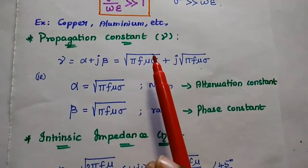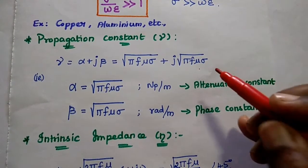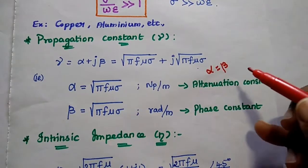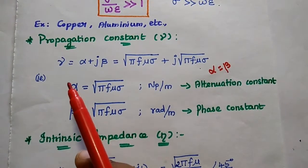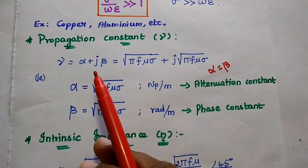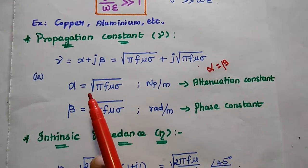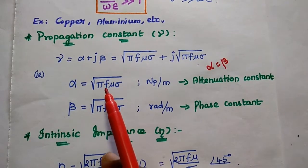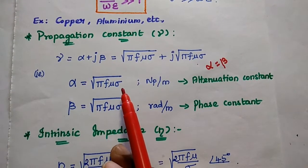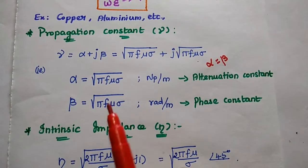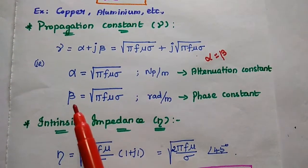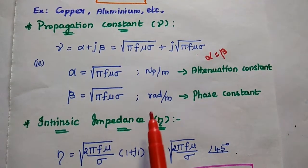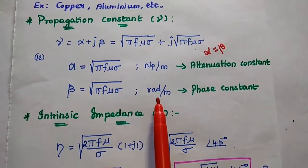The first important formula is the propagation constant. For a good conductor, the attenuation constant is equal to the phase shift constant. We represent gamma as alpha plus j beta. Alpha is the attenuation constant with formula square root of pi f mu sigma, with unit neper per meter. For phase constant beta, the value is the same, but the unit is radian per meter.